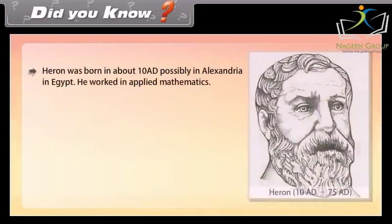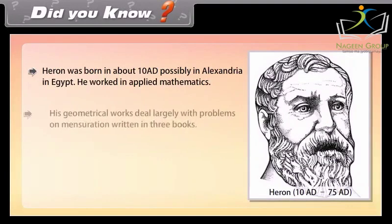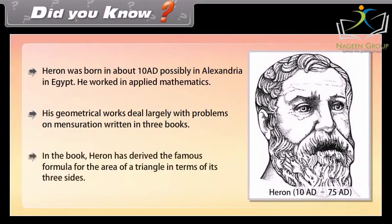Did you know? Heron was born in about 10 AD, possibly in Alexandria in Egypt. He worked in applied mathematics. His geometrical works deal largely with problems on mensuration written in three books. In one book, Heron derived the famous formula for the area of a triangle in terms of its three sides.